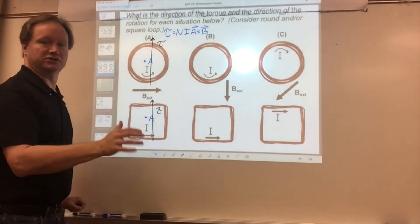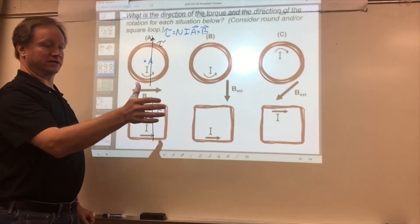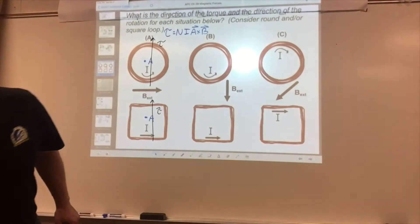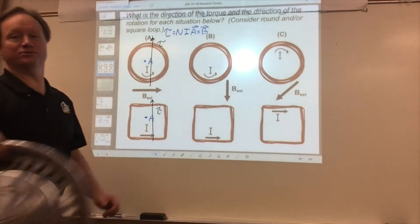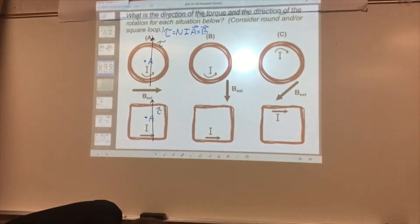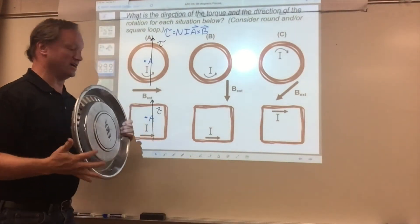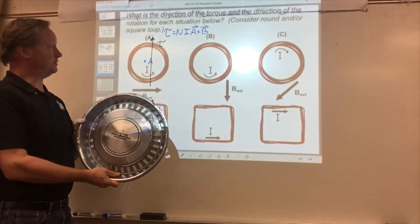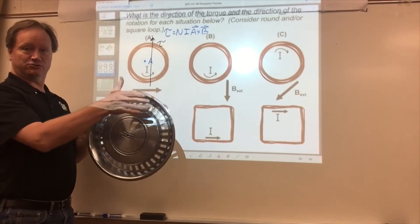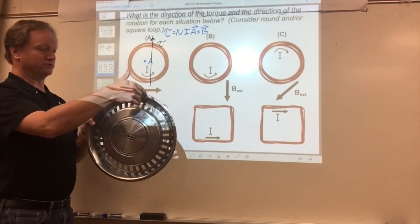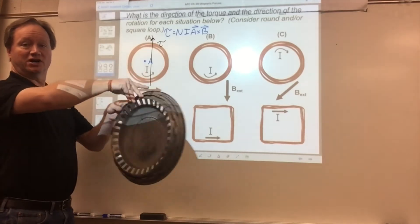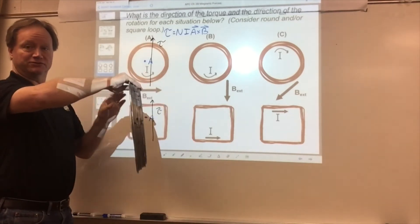So if you have a torque vector in an upward direction, you're going to rotate your loop around that way. Using the hubcap — here's my hubcap, here's my loop — my torque vector is up in that direction, so I'm going to rotate in this fashion on each of those first two.